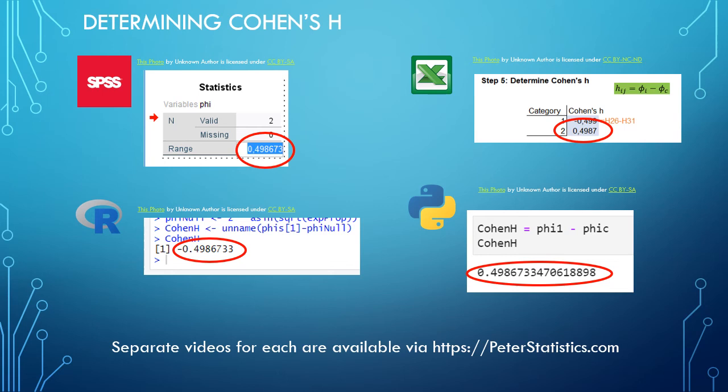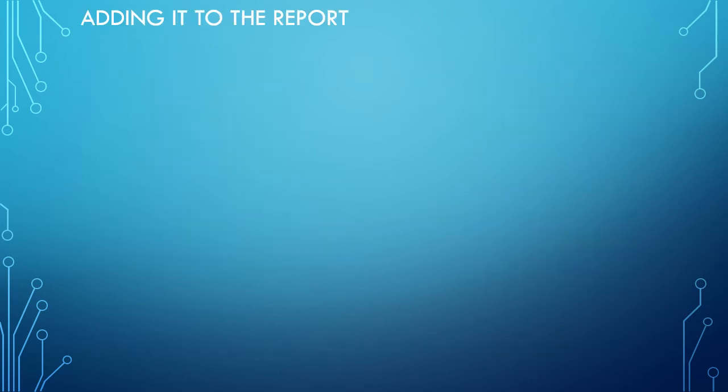So once I have obtained Cohen's H2—and the example was about 0.5, just below it—then I first need to convert it to Cohen's H. So I use that formula: I simply multiply it with the square root of 2. That gives me about 0.70.